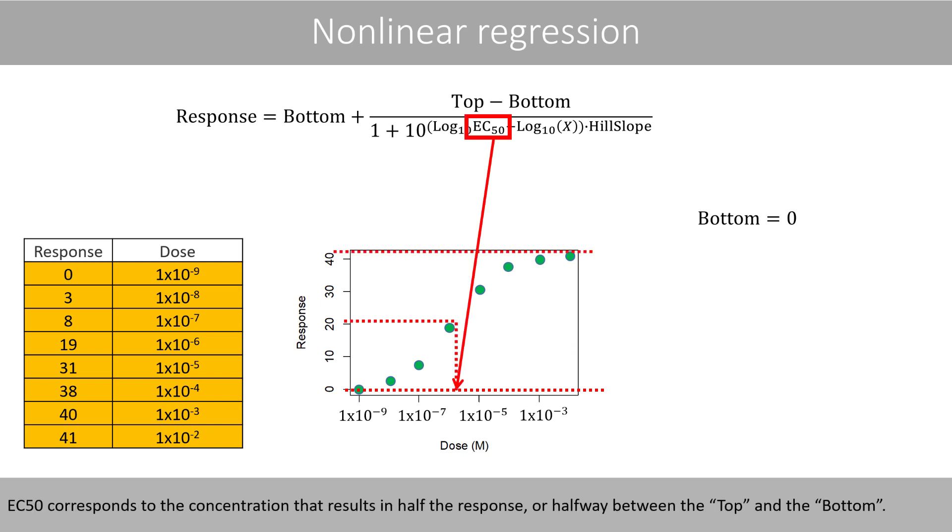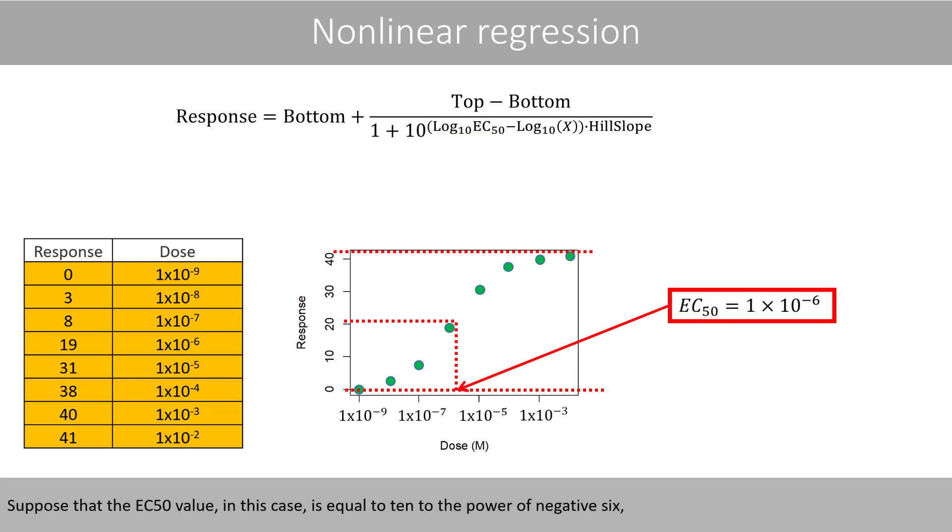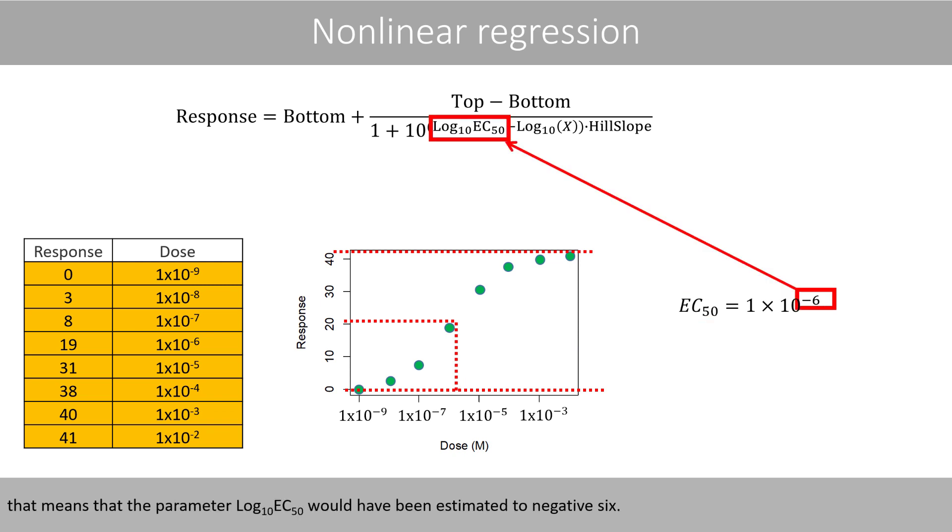EC50 corresponds to the concentration that results in half the response, or halfway between the top and the bottom. Note that the parameter is here called log10 EC50. Suppose that the EC50 value in this case is equal to 10 to the power of negative 6. That means that the parameter log10 EC50 would have been estimated to negative 6.